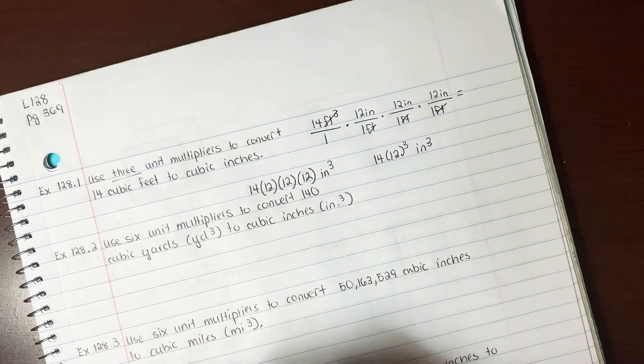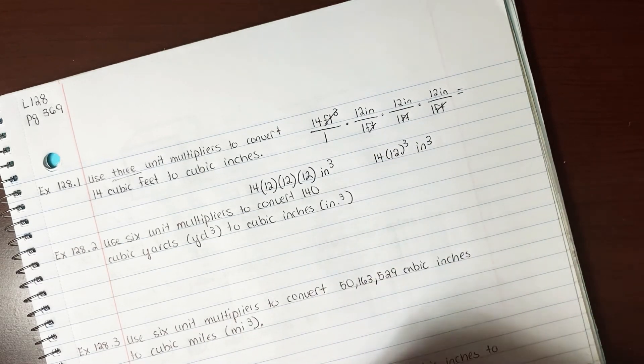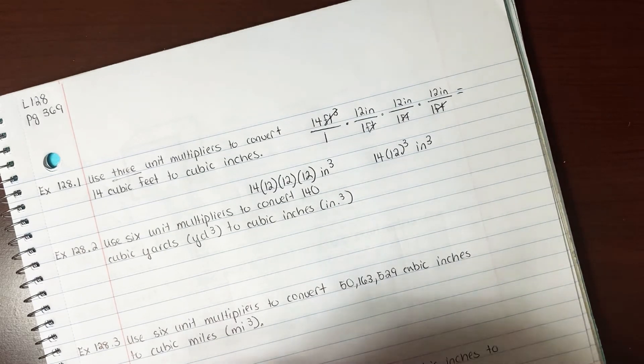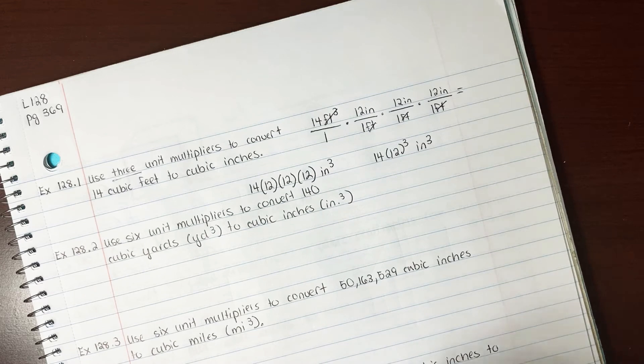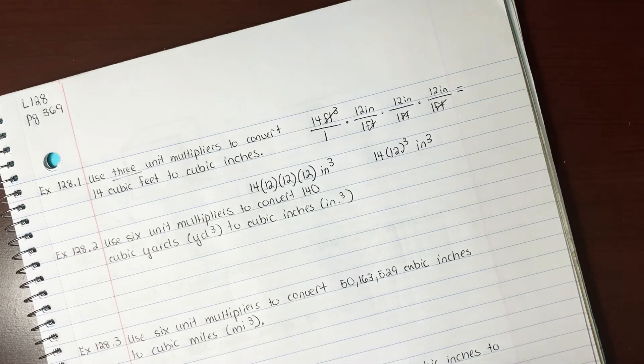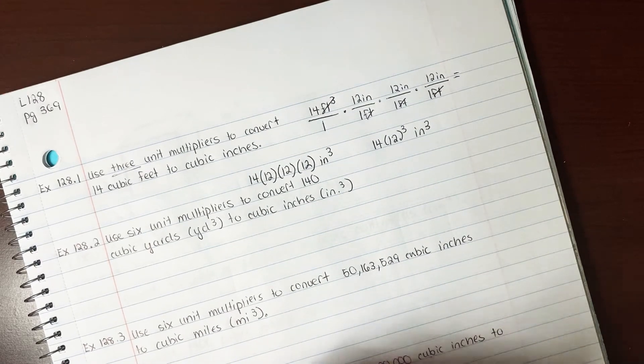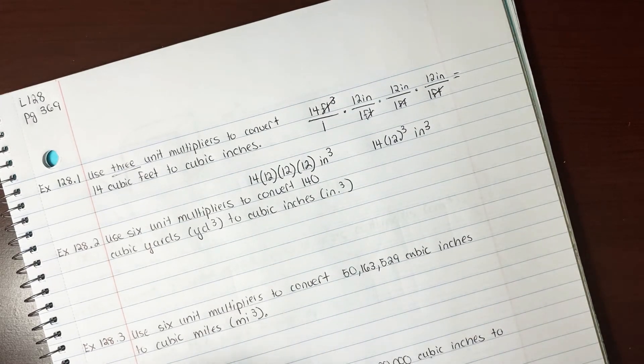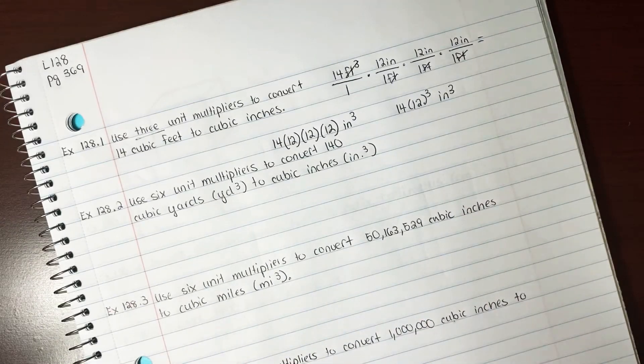So again, you guys know this. Write out your unit multipliers. Some of you are really good about this. You put them on the front of your page. I can see, and I know that you're doing them. Because when you get into high school, and I was just talking to the high school teacher about this, you're going to have a lot of unit multipliers. So you need to be in the habit of just being able to pump them out. You want to get in the habit of that now while you're using six, so that later when you have to use 21, you already know how to do this. So don't be lazy. Write them out.